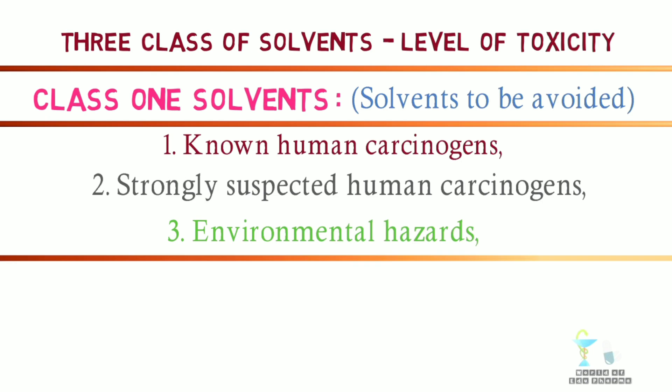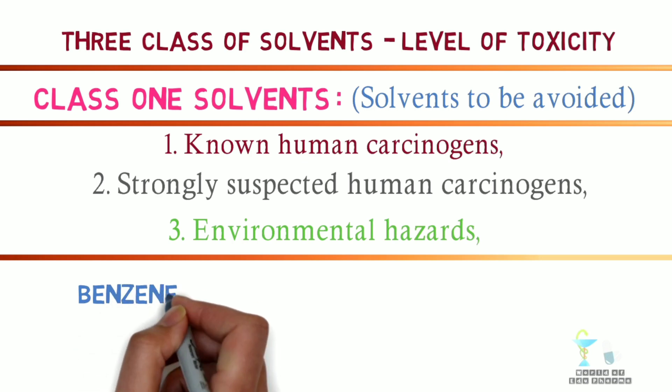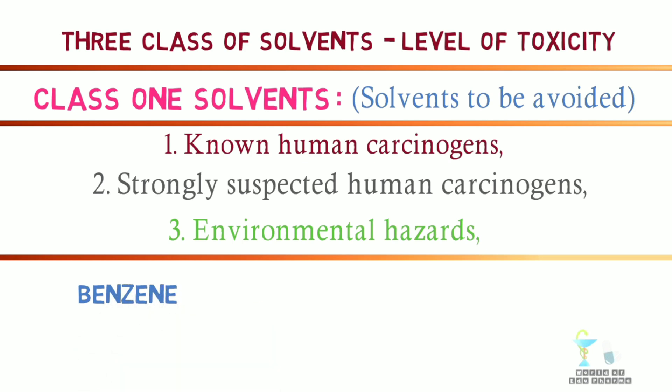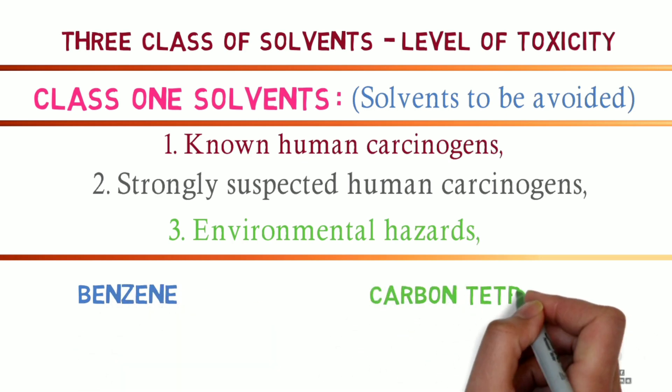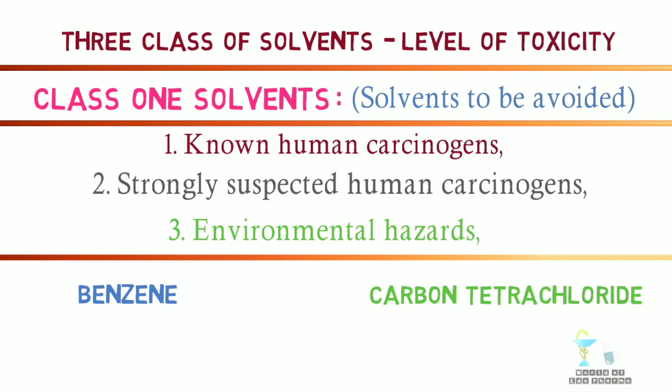These Class 1 solvents, that are known to cause unacceptable toxicity, should be avoided in the production of drug substances, excipients, or drug products. Examples: benzene, which is a carcinogen, and carbon tetrachloride, which is toxic and causes environmental hazard.